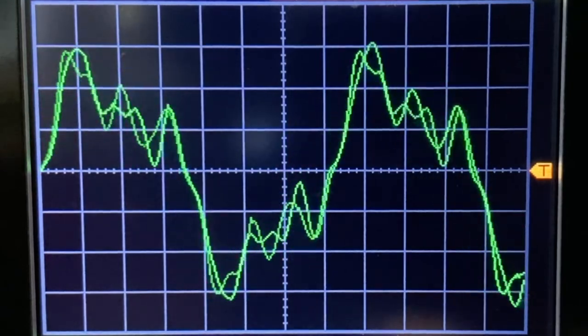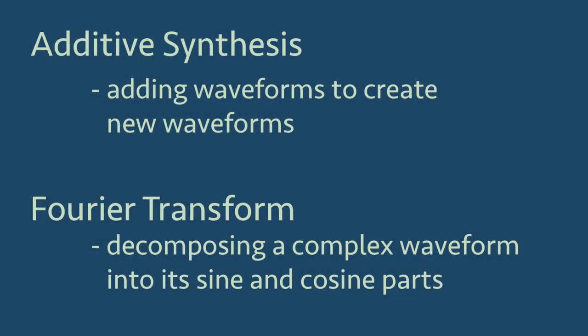This process of adding waves to create new ones is called additive synthesis. The opposite is called a Fourier transform, which is the process of decomposing a complex waveform into its sine and cosine parts.